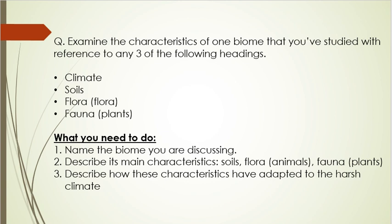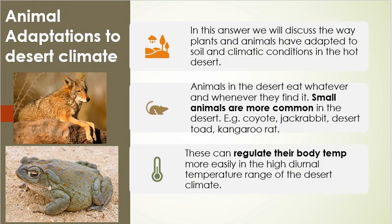We need to describe the biome's soils, flora, and fauna — flora meaning plants, fauna meaning animals — and in particular we're going to focus on how animals and plants have adapted to the harsh desert climate and desert soils. Your intro to this kind of question would be something along the lines of: 'In this answer we will discuss the way plants and animals have adapted to the soils and climatic conditions in the hot desert.'